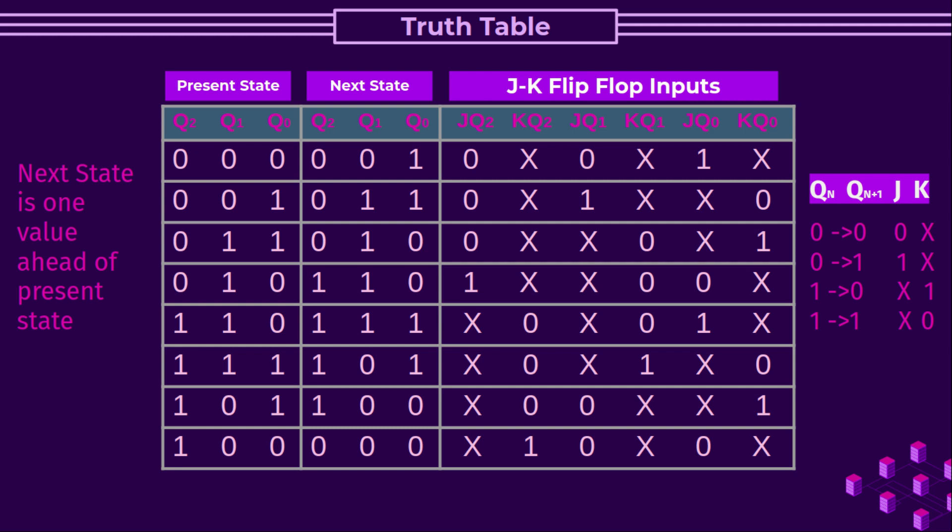As seen from the JK flip-flop truth table: a transition from 0 to 0 results in J=0 and K=don't care; from 0 to 1 gives J=1 and K=don't care; from 1 to 0 gives J=don't care and K=1; and from 1 to 1 gives J=don't care and K=0. The cross symbol represents a don't care condition. Pause the video to figure out the flip-flop inputs for each bit transition yourself.